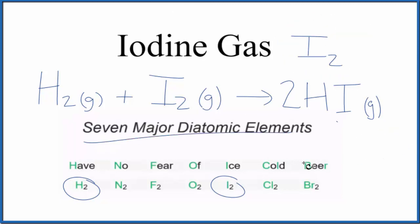There are seven major diatomic elements, and this is kind of an easy way to remember them. Have no fear of ice cold beer.